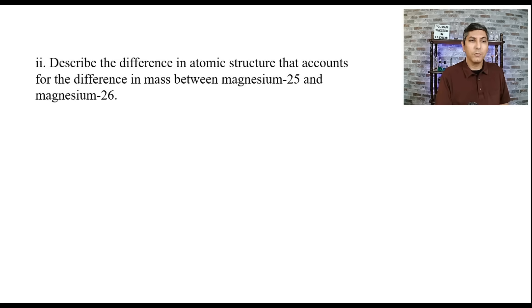Now, part two in A here says, describe the difference in atomic structure that accounts for the difference in mass between magnesium-25 and magnesium-26. Well, we know that isotopes are different in the fact that they have different numbers of neutrons. And so magnesium-26 has one more neutron than magnesium-25. So if you said that, once again, give yourself a point as well.